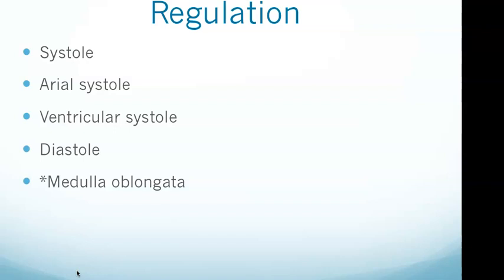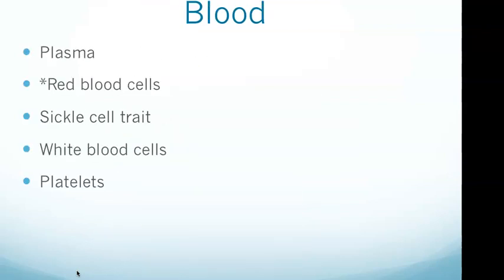During diastole, the heart muscle relaxes and the chambers are passively filled with blood. Backflow of blood into the chambers is a sign of weakened heart valves, such as in congestive heart failure. The medulla oblongata regulates cardiac output: it signals a decrease in cardiac output when blood pressure increases, and an increase in cardiac output when blood pressure decreases.